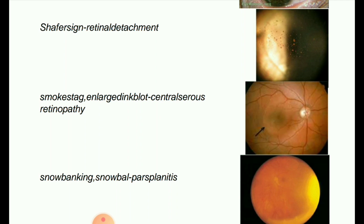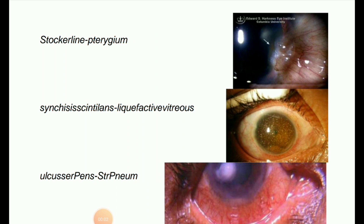Next image: snowball and snow banking — pars planitis. It is intermediate uveitis, a chronic low-grade vitreous inflammation with snowball opacities, snow banking, peripheral vascular sheathing, and peripheral granuloma. In a North Indian population, tuberculosis was found to be an unusually common etiology of intermediate uveitis.